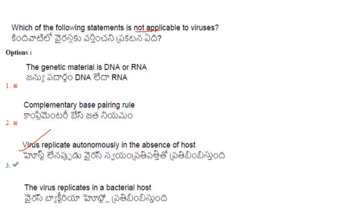Which of the following statements is NOT applicable to viruses? The genetic material being DNA or RNA — that is true for viruses. Complementary base pairing — also correct. Viruses replicate autonomously in the absence of a host — this is NOT correct, as viruses can only replicate within a living host cell. So the answer is option 3.